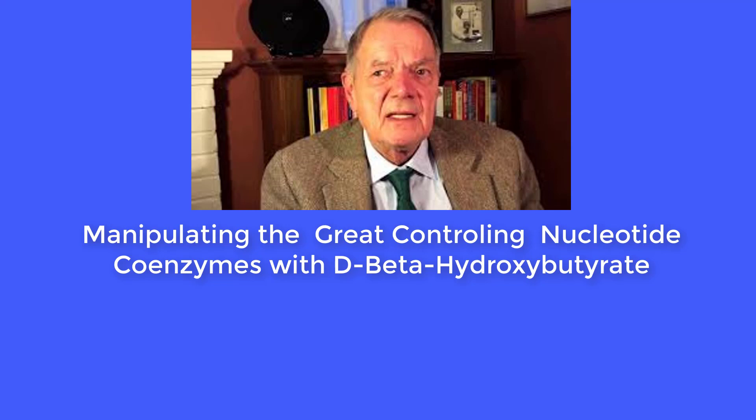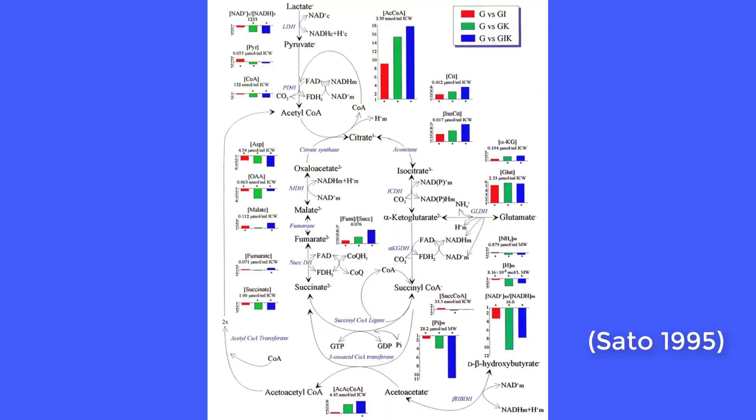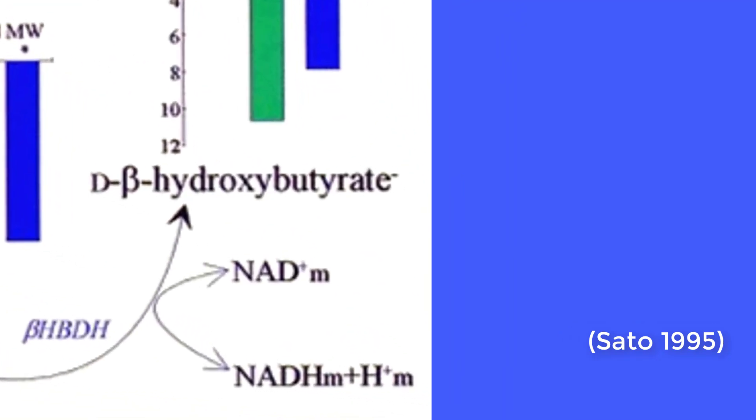Dr. Veach has studied the chemical and electrical potential of the great controlling nucleotides by measuring them under fasted and well-fed states, as well as under ketogenic diet and in the presence of exogenous ketones. He showed that the great controlling nucleotide coenzymes themselves were regulated by beta-hydroxybutyrate.